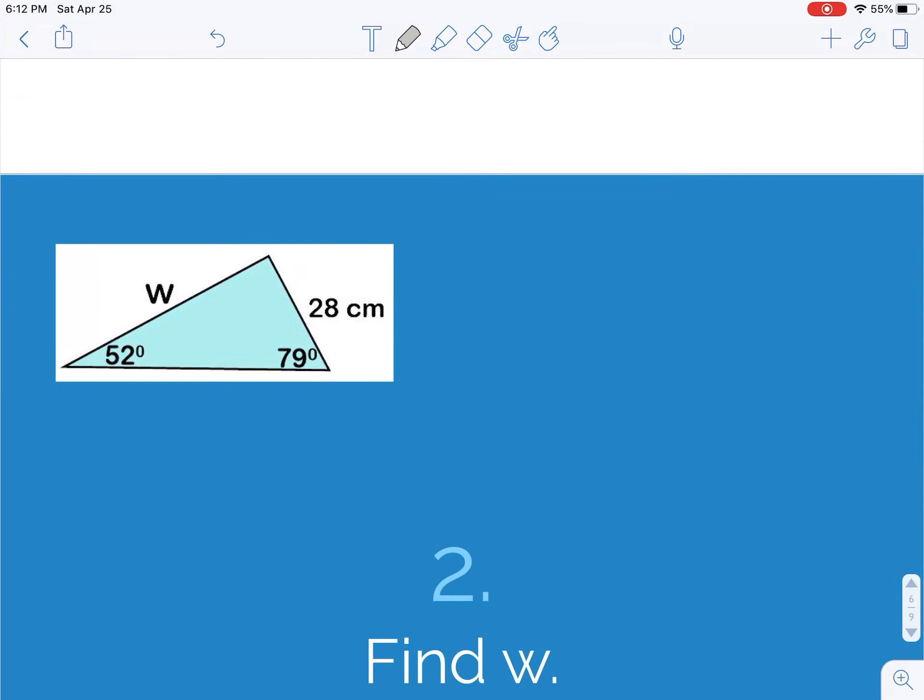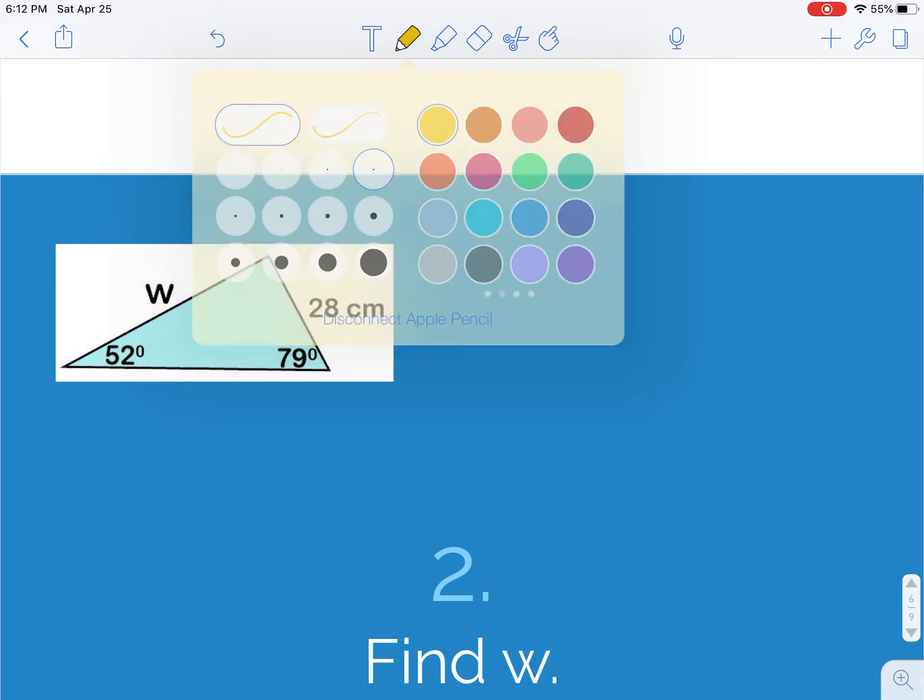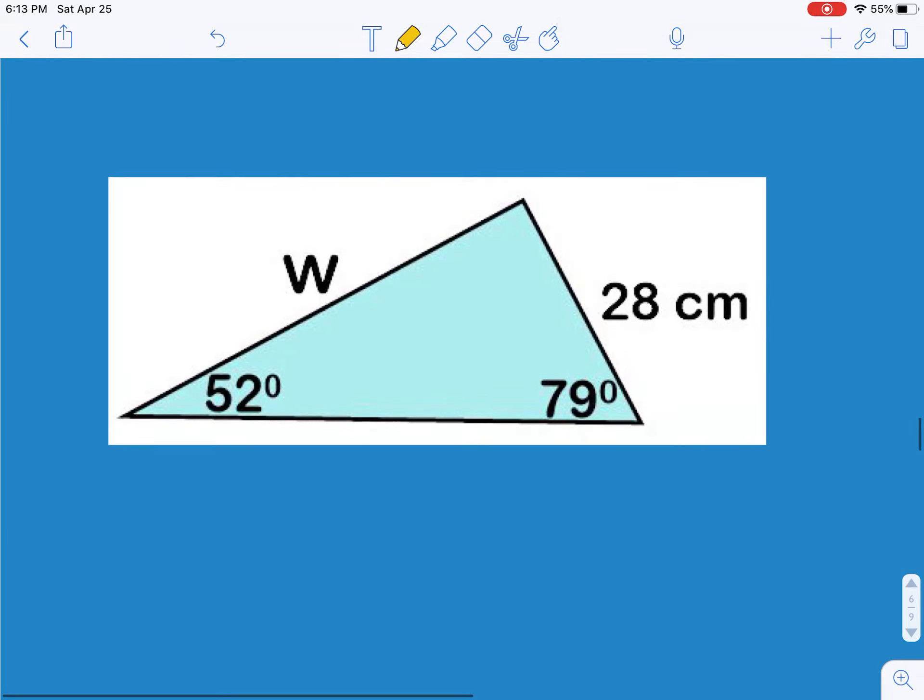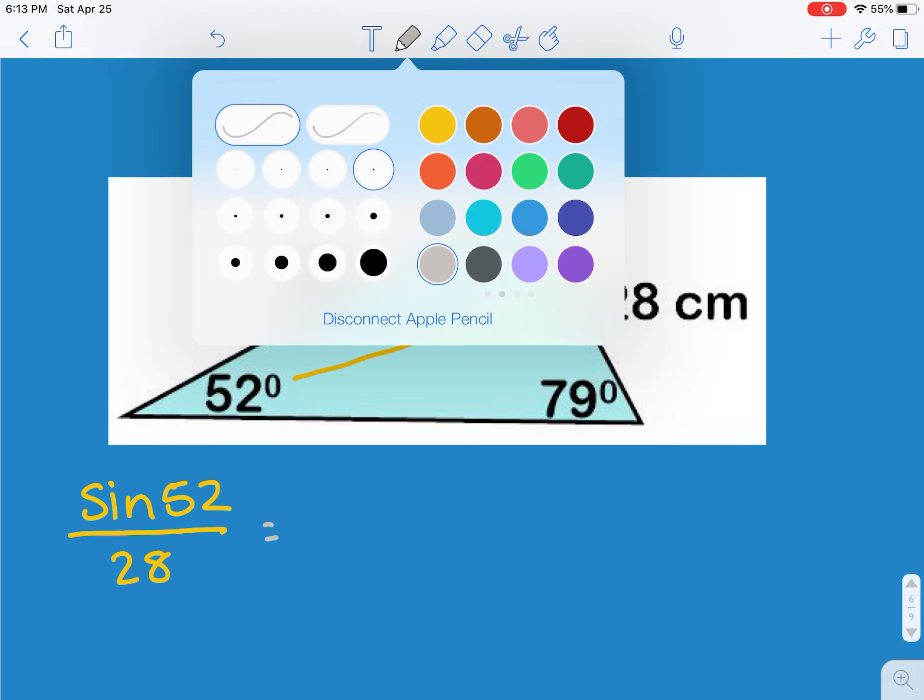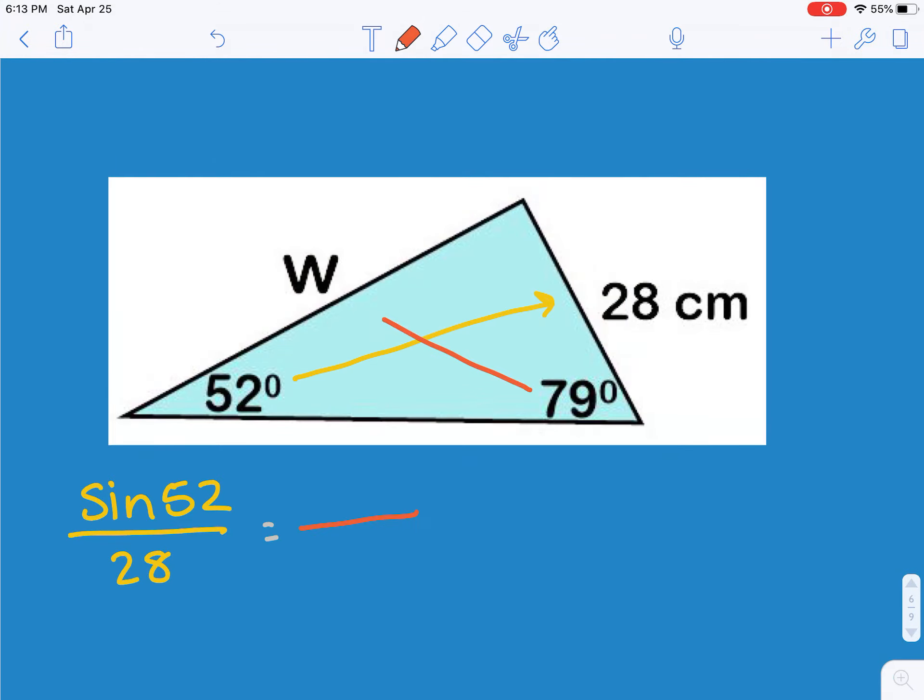We're going to do another example. This time we're looking for a side. Sine of 52 divided by 28 has to equal sine of 79 over W.